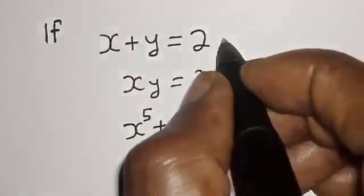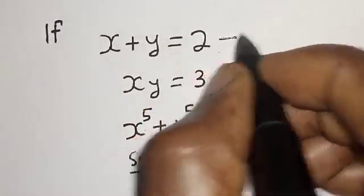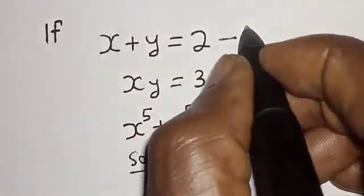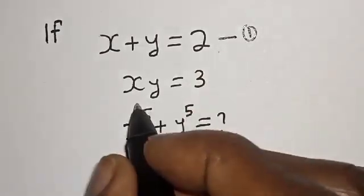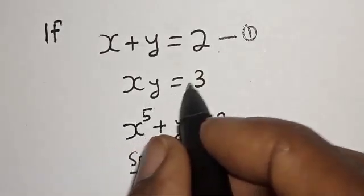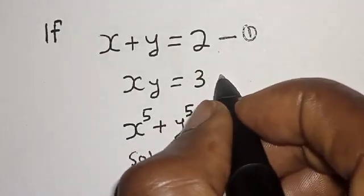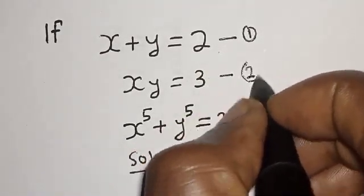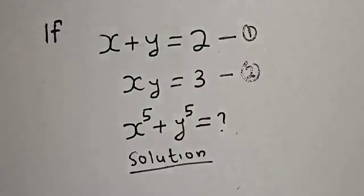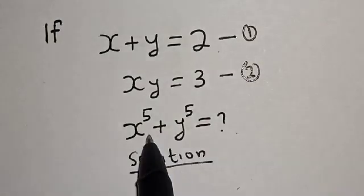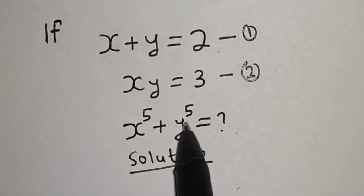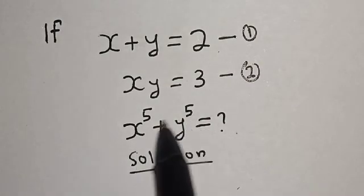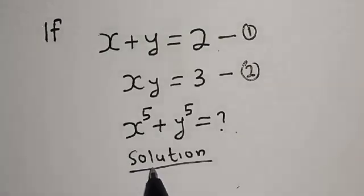s plus y is equal to 2 — let's call this equation 1. s times y is equal to 3 — let's call this equation 2. Then in order to find the value of s raised to power 5 plus y raised to power 5, let's simplify this.